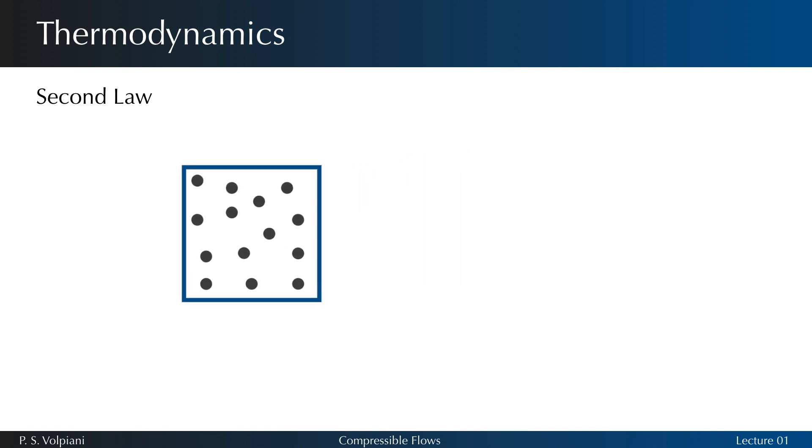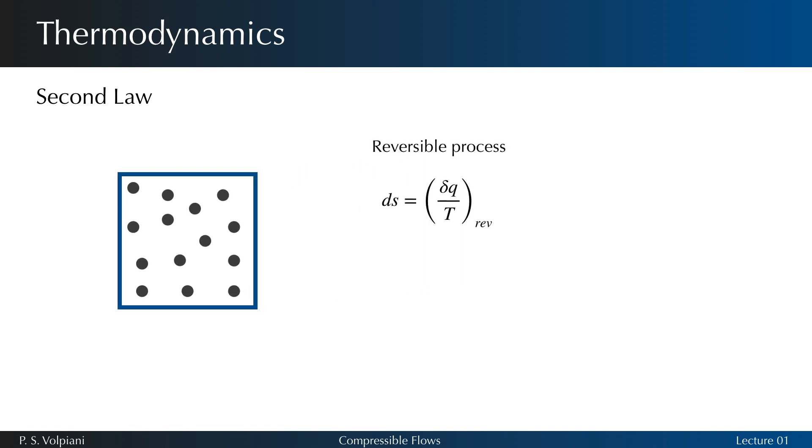The second principle of thermodynamics states that: 1. There exists a state of variable S, called entropy, which is given for a reversible process by the relation δQ/T. Combining the first law with the definition of entropy, we obtain the Gibbs relation, including the temperature, entropy, internal energy, pressure, and density.